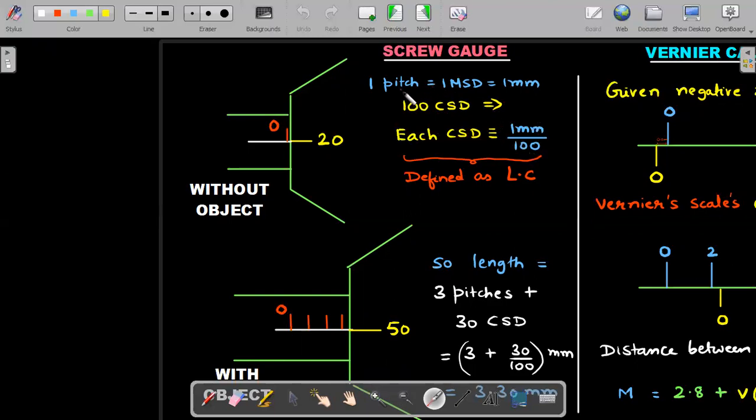In future questions, there is no need that one pitch should be one MSD. These two could be two different numbers. Always remember each CSD is related to pitch at this particular place. Since in this question both are given the same, I have written this. And this is nothing but the definition of least count. When someone asks you what is the least count of a screw gauge, you should say it is equal to the pitch divided by number of circular scale divisions. This is 0.01mm.